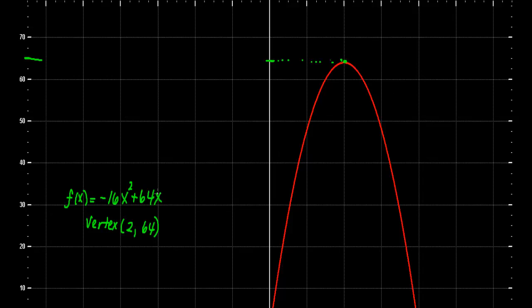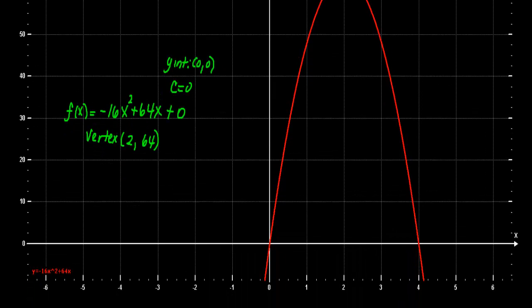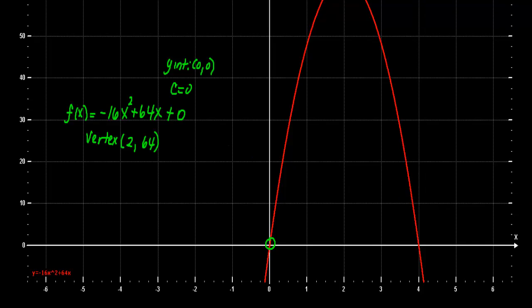I also want to show you, this function here doesn't have a constant value. The c value here, plus c, is not there. So what that tells me is that c is equal to 0. This would be a plus 0, where c equals 0, and then your y-intercept would be at 0, 0. And we can verify this. I'm going to scroll this down, and notice that this function does cross the y-axis at the value for 0. So that's why you don't see a number here.